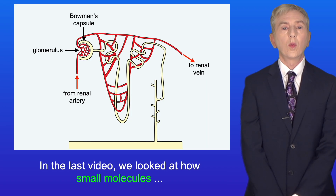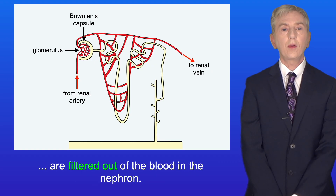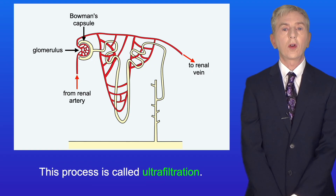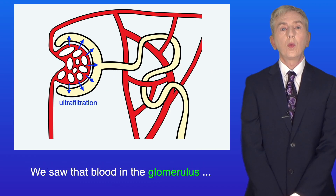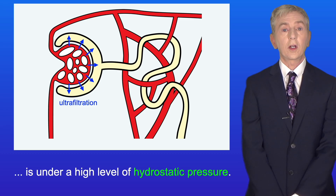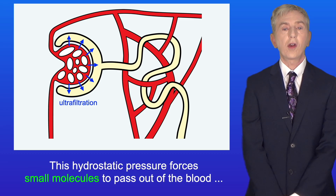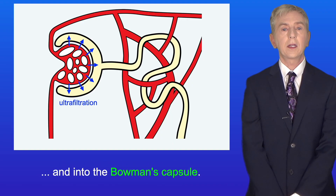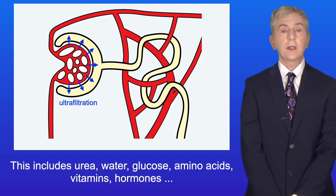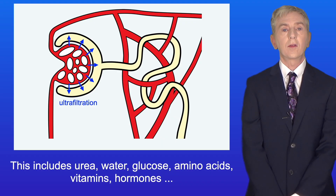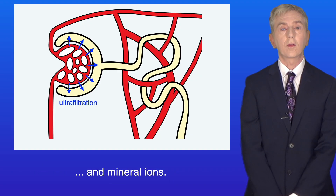In the last video we looked at how small molecules are filtered out of the blood in the nephron. This process is called ultrafiltration, and remember that ultrafiltration takes place in the glomerulus. We saw that blood in the glomerulus is under a high level of hydrostatic pressure. This hydrostatic pressure forces small molecules to pass out of the blood and into the Bowman's capsule. This includes urea, water, glucose, amino acids, vitamins, hormones and mineral ions.